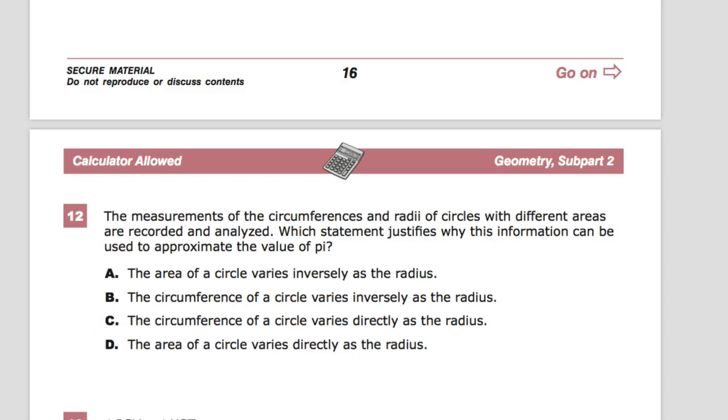Welcome. This is the TenReady Practice Test for Geometry, question number 12. We're in subpart 2 so we can use a calculator here. The question says the measurements of the circumference and radii of circles with different areas are recorded and analyzed. Which statement justifies why this information can be used to approximate the value of pi?